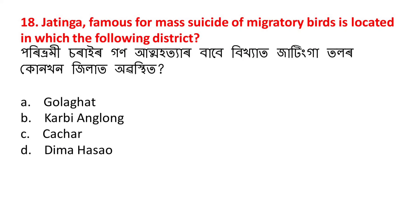Jatinga, famous for mass suicide of migratory birds, is located in which of the following districts? Paribrami sarayir gano atmohit tarvabhe vikkhat jatinga tolar kunkhon jilat avasthito. The answer is D - Mahsaw (Dima Hasao) district.